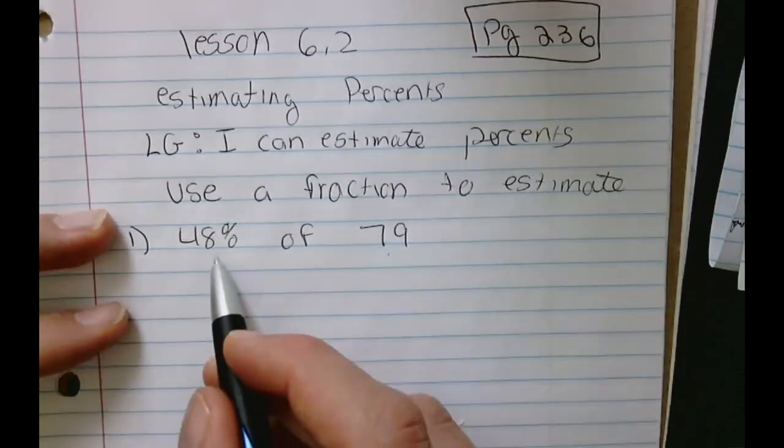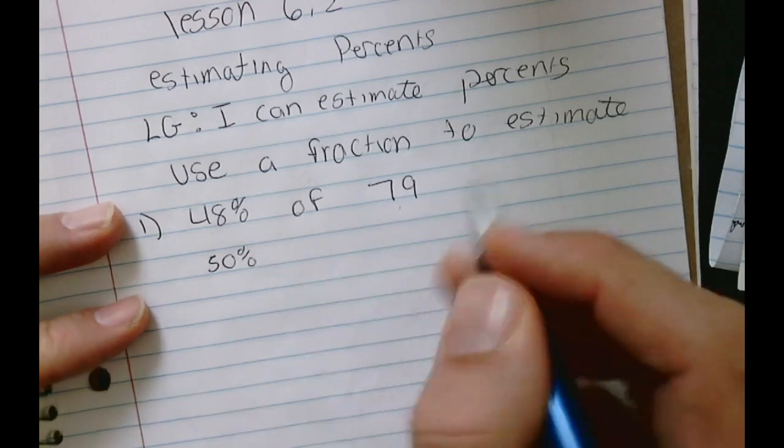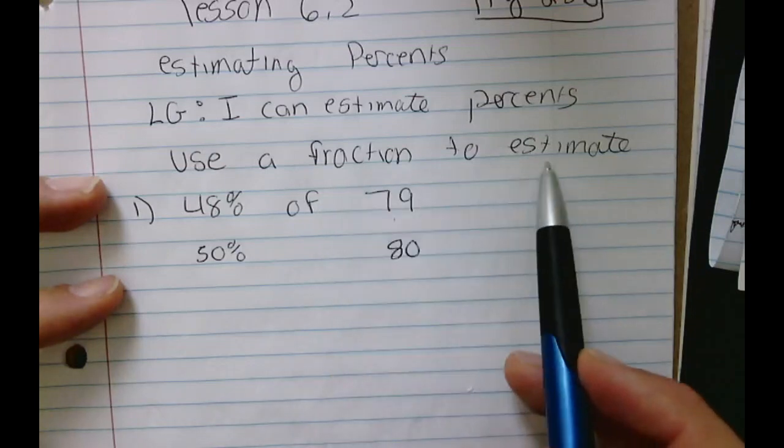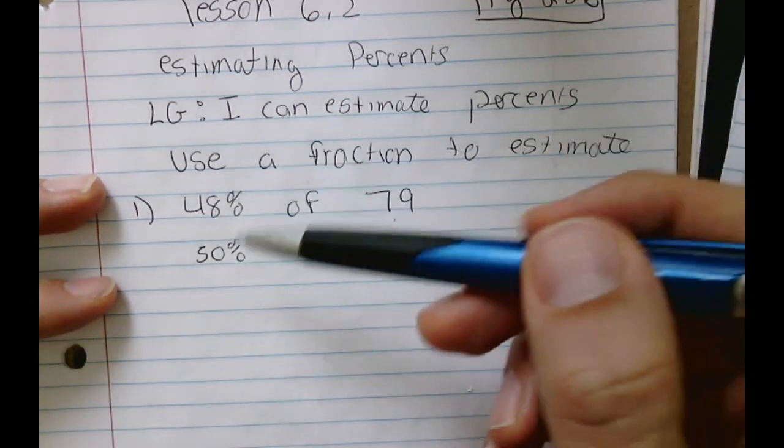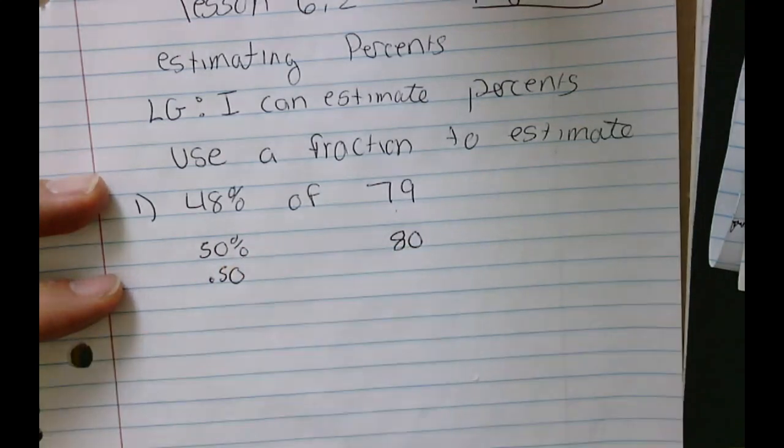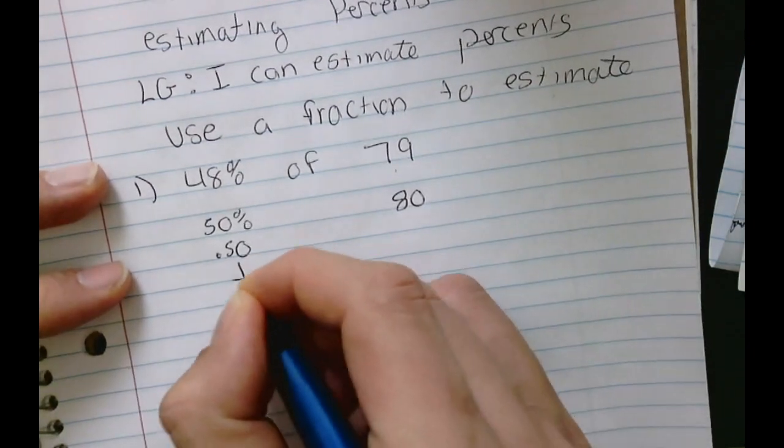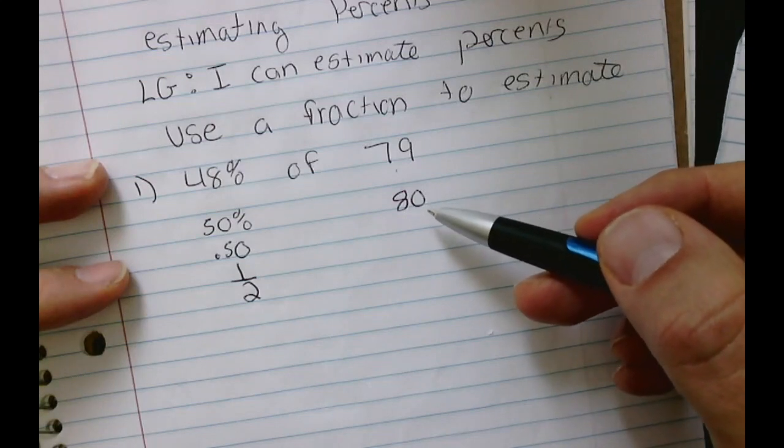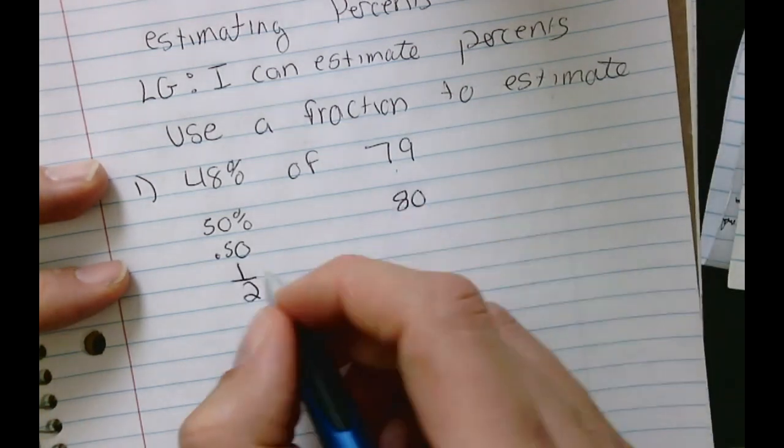We have 48% of 79. Well, 48% is about 50%, and 79 is about 80. Now, because we're using fractions to estimate, we're going to convert this 50% into a fraction. Now, 50% is actually equivalent to 0.50, and 0.50 as a fraction is a half. Now, I picked 80 because it was a compatible number, meaning it's really easy to work with a number that ends in a zero like this.